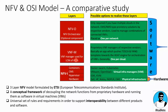The main function of the ETSI MANO model is to support interoperability between different products and software. This means the NFVI of one vendor should work properly with the VNFM of another vendor, and the VNFM should work with the NFVO of yet another vendor.